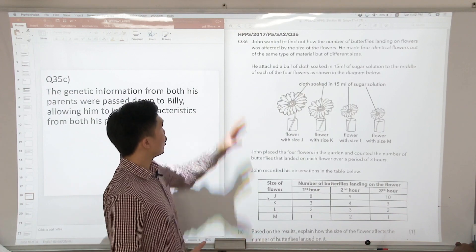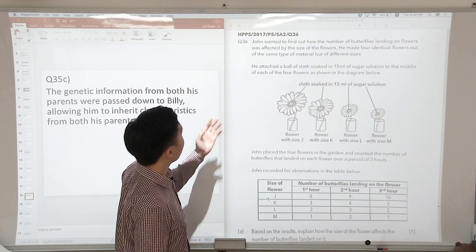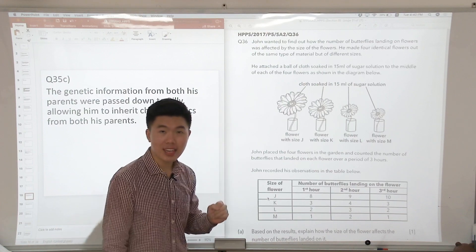Let's have a look at question 36. John wanted to find out how the number of butterflies landing on a flower was affected by the size of the flowers.